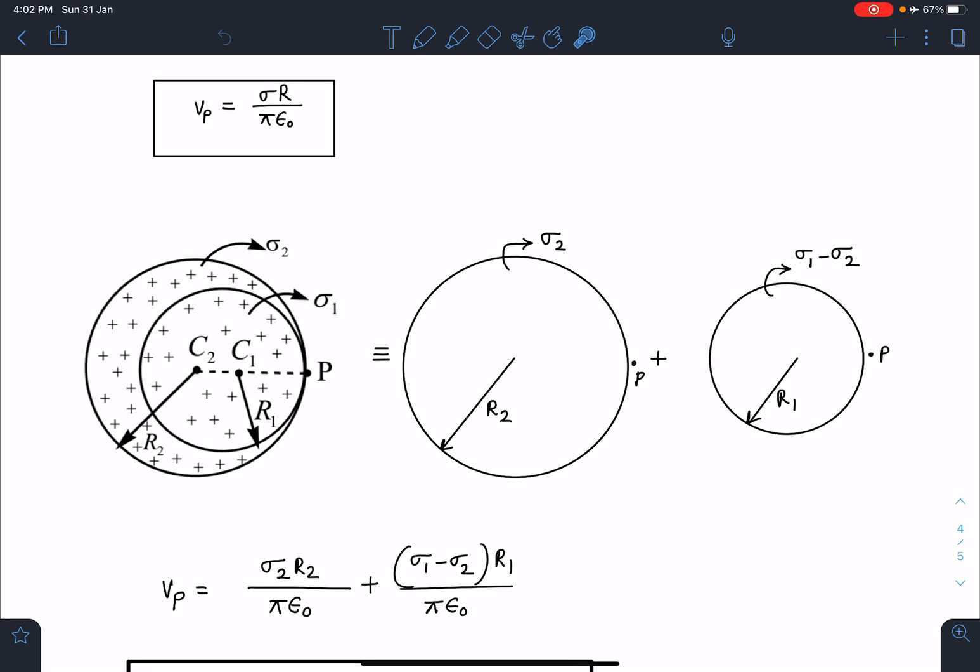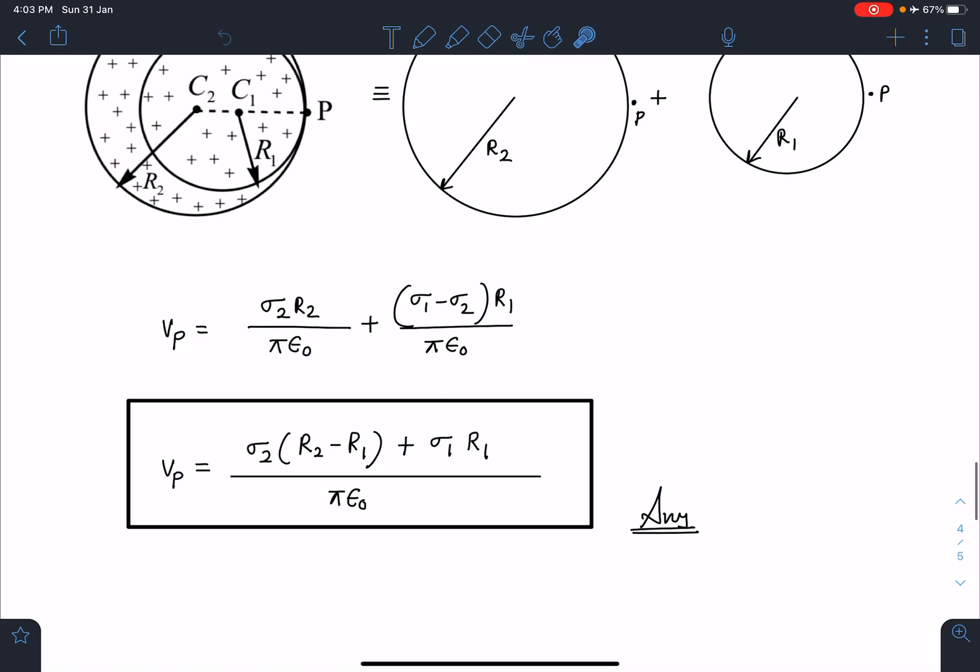Similarly, potential due to the smaller one having charge density sigma 1 minus sigma 2, so this will become (sigma_1 - sigma_2)*r1/(pi*epsilon_0).